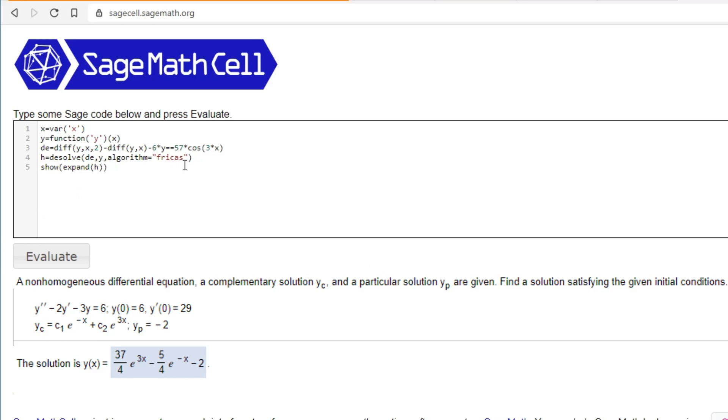This time we're given initial conditions. So we can change the differential equation to diff(y,x,2) minus 2 times diff(y,x) minus 3 times y equal to 6. And then before the algorithm, put ics equals bracket 0 because they're both at 0, comma 6 for the first one, and then 29 for the derivative.